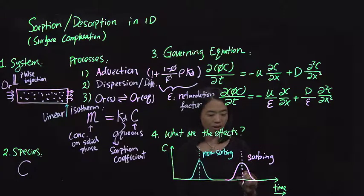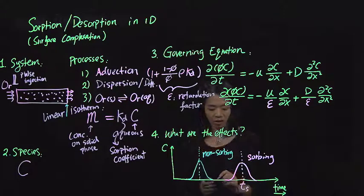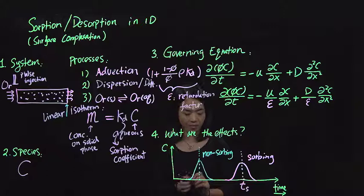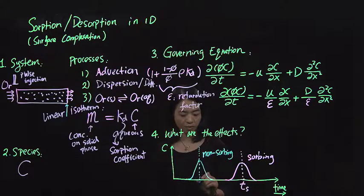So if we think about this, we call that T sorbing species. And this is T, just the tracer, so it's non-sorbing.